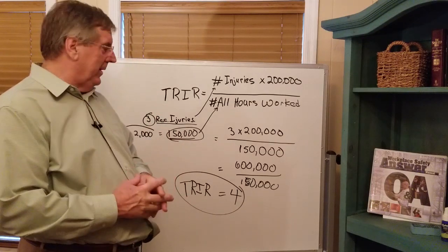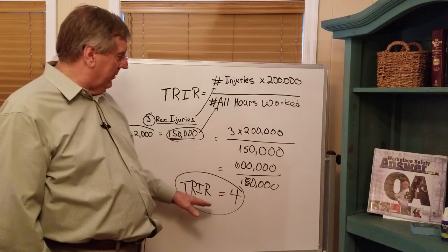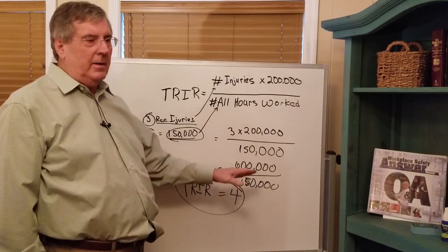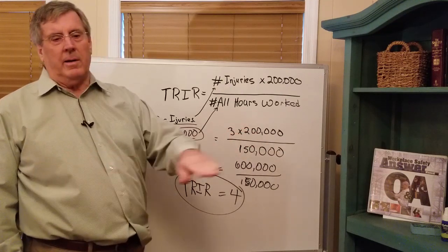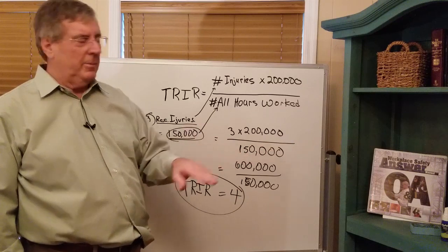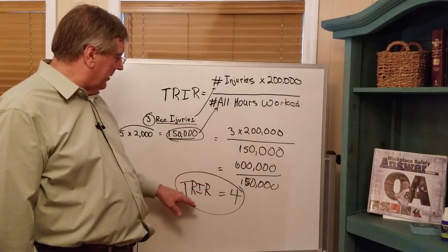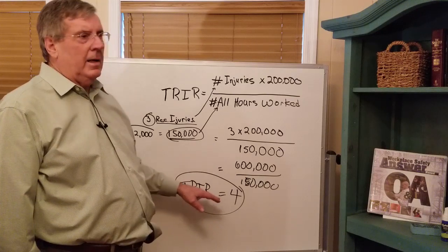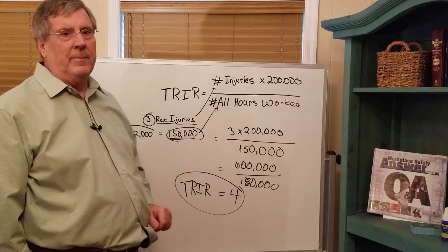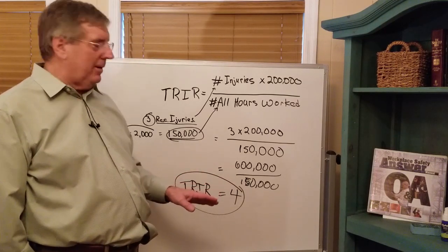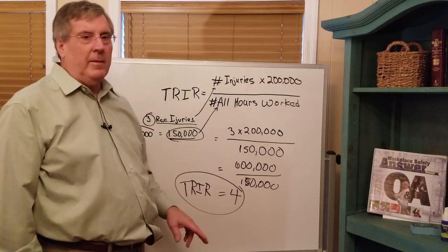For example, if you're a roofing contractor, every roofing contractor can do this calculation and come up with their own number to compare against all other roofing contractors. For a roofing contractor, the average total recordable injury rate is probably in the range of 6 to 7 — so if your TRIR is 4, you're doing well.